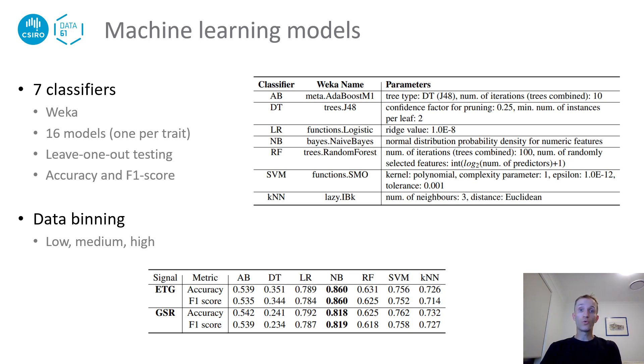When combining all traits, the Naive Bayes classifier performed best for both ETG and GSR, as shown in the table at the bottom. We attribute this in part to the use of CFS, since the Naive Bayes performance is adversely affected by highly correlated input features, which CFS will reduce.